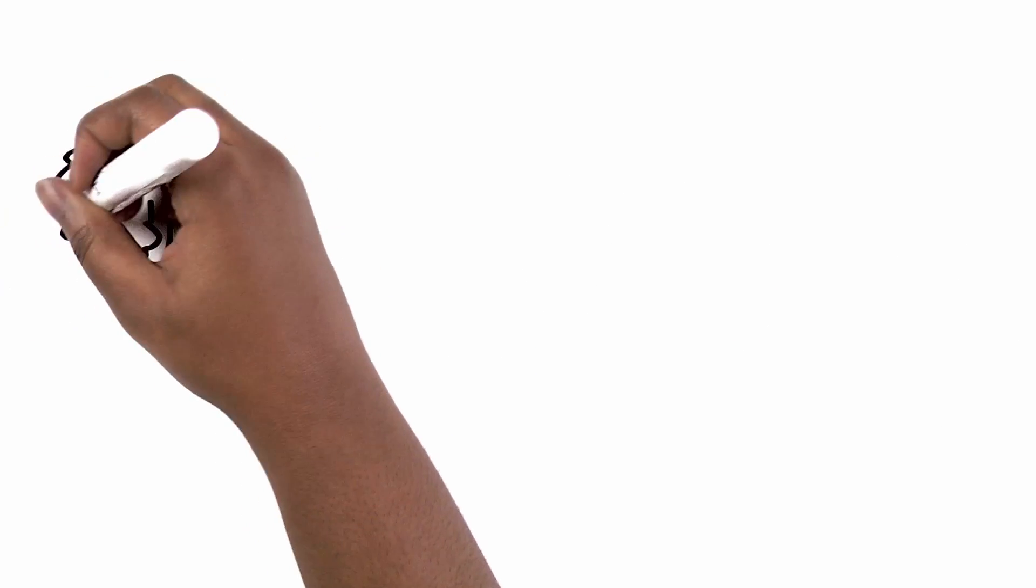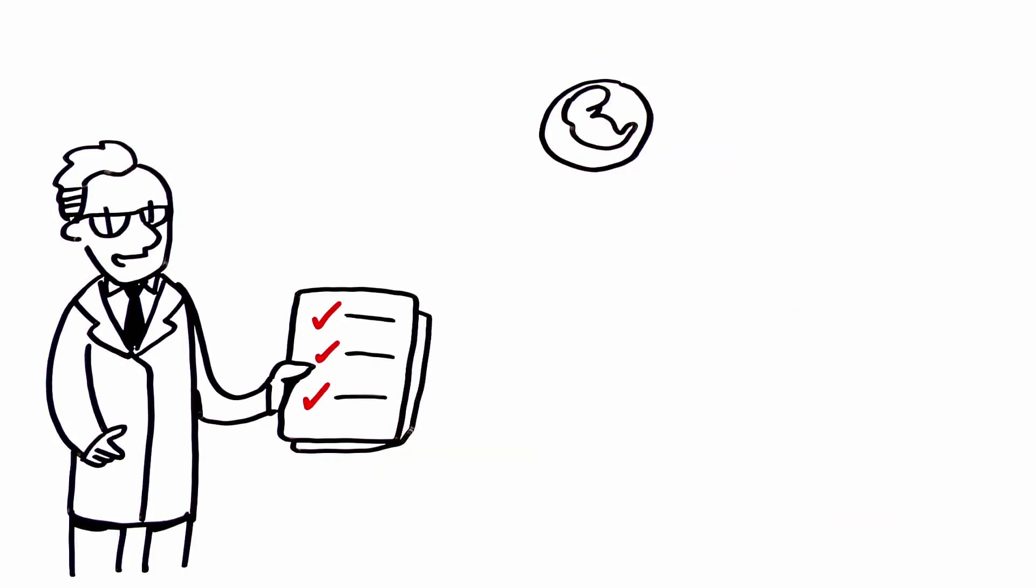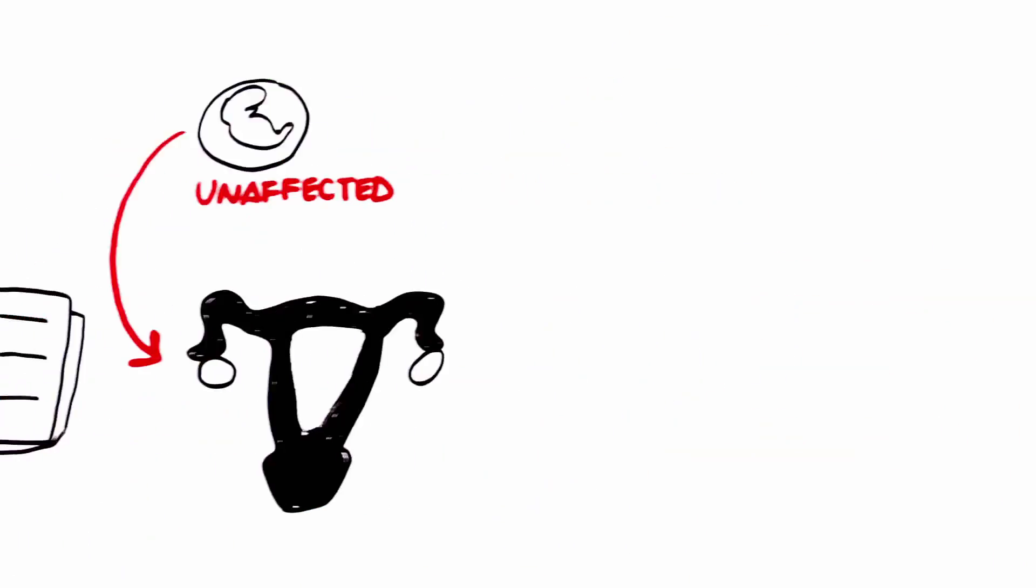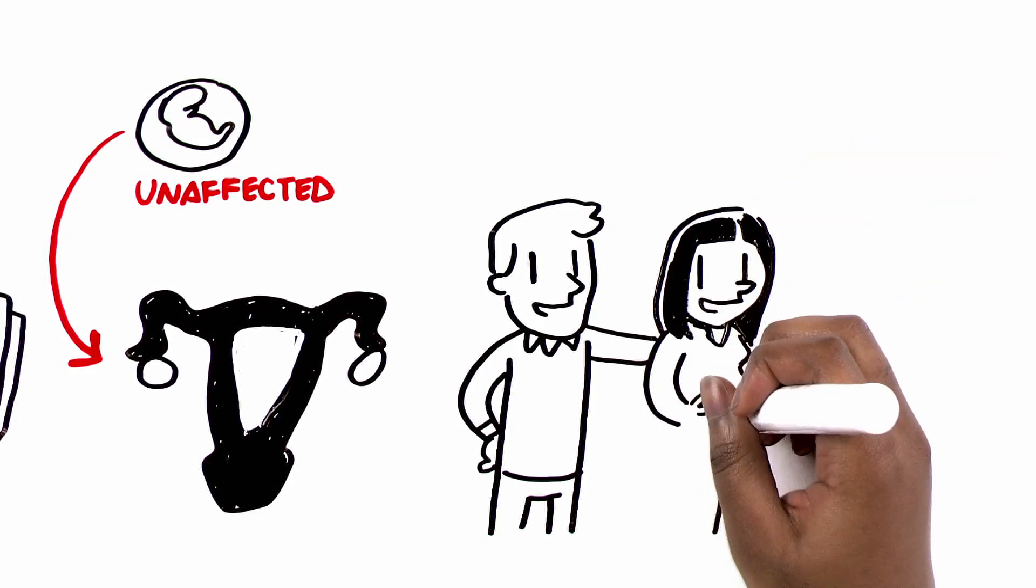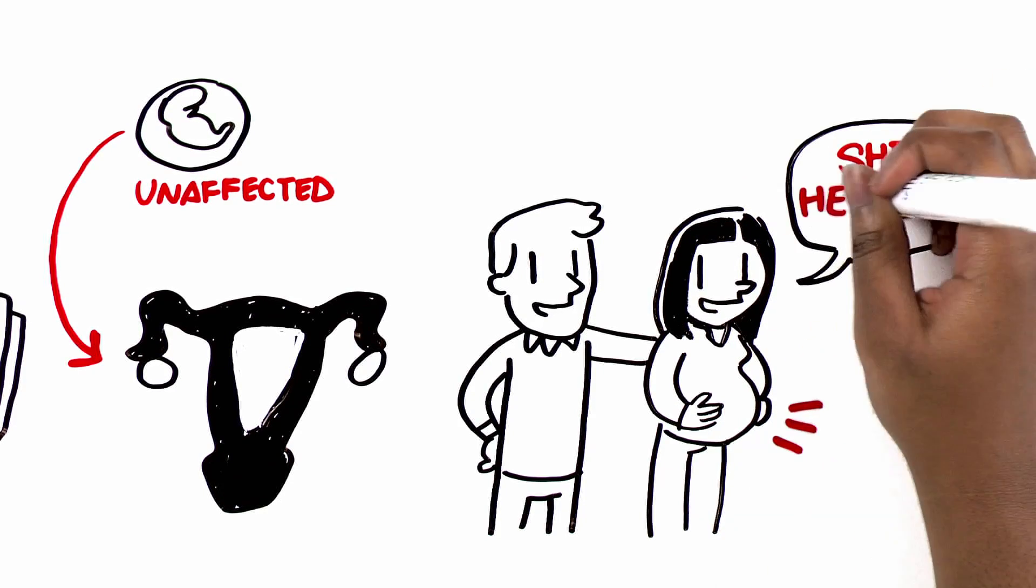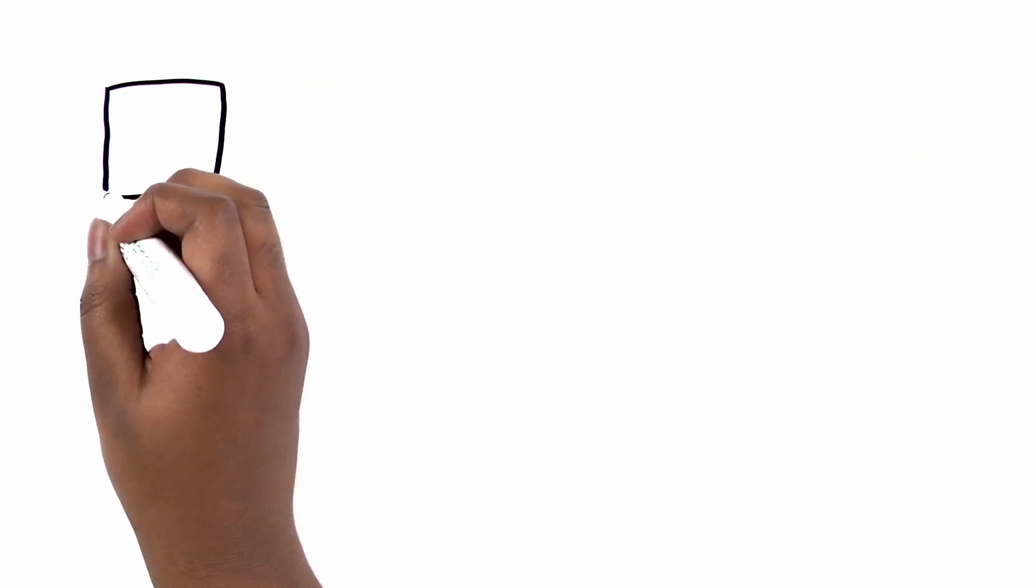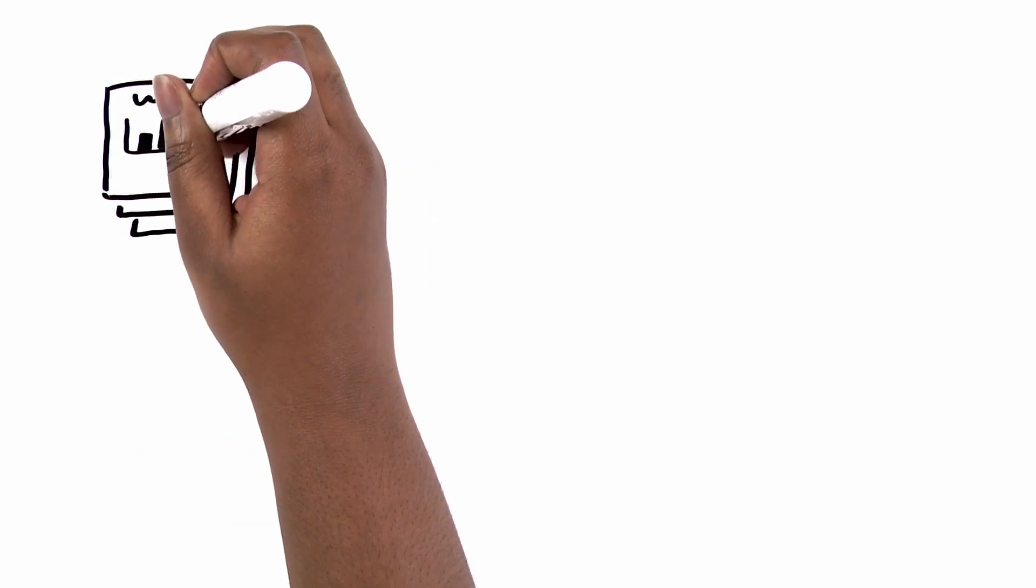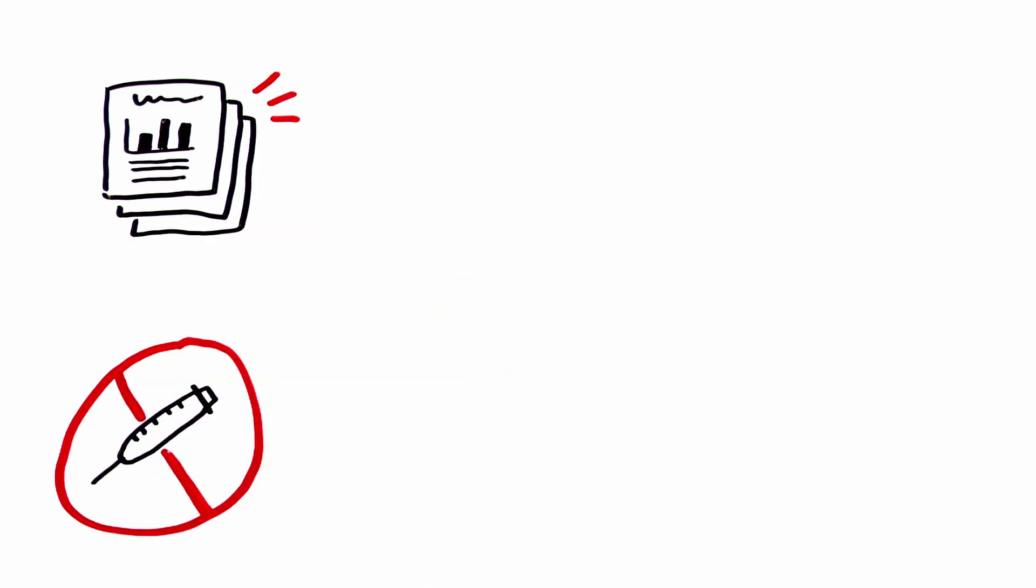Your doctor can use the information from our test to transfer a genetically unaffected embryo to the womb. This allows you to begin pregnancy, knowing there is little to no risk your baby will inherit the genetic disease that you're concerned about. Plus, there are other tests that can be done at the same time on the same embryonic sample, meaning a second biopsy isn't necessary.